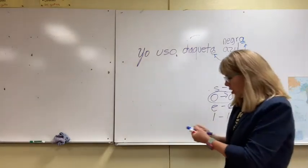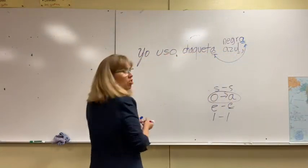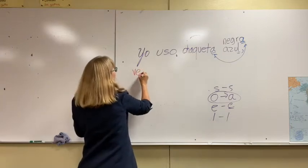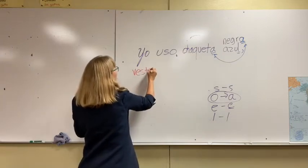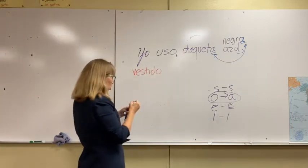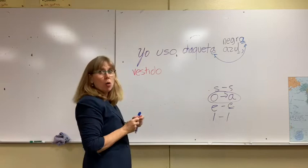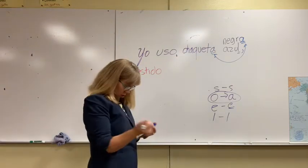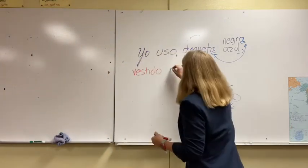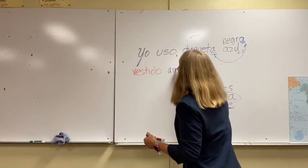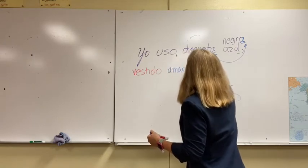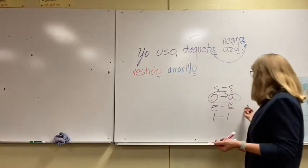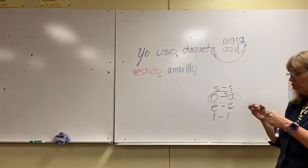After the comma I'm going to put my next item of clothing, which today is a vestido. So I'm going to write vestido. Vestido ends in an O even though it's for women, and it's yellow so it's amarillo. Amarillo is already an O, and only O's change to A, so I don't have to change anything.